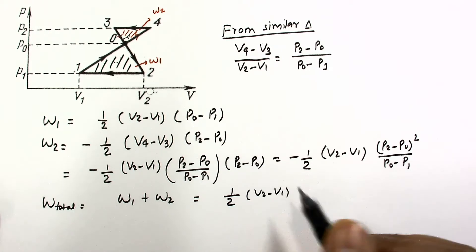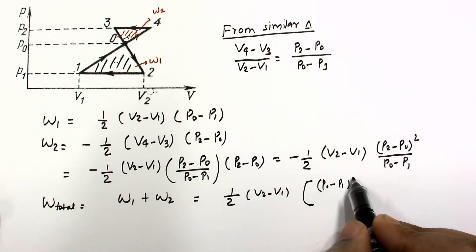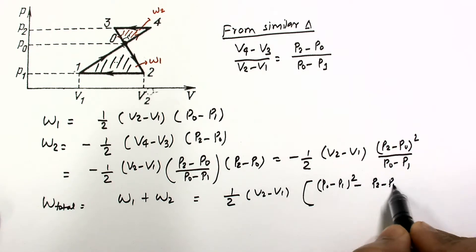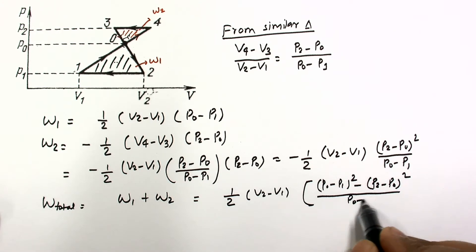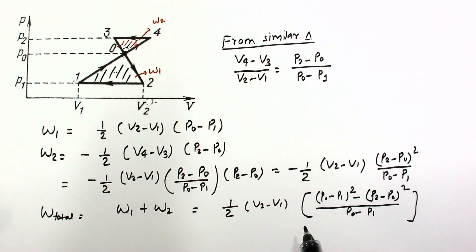So after adding these two, we will get the final answer like this: P0 minus P1 square minus P2 minus P0 square divided by P0 minus P1. Now we can put the numerical values given in the problem, and after putting the numerical values given in the problem.